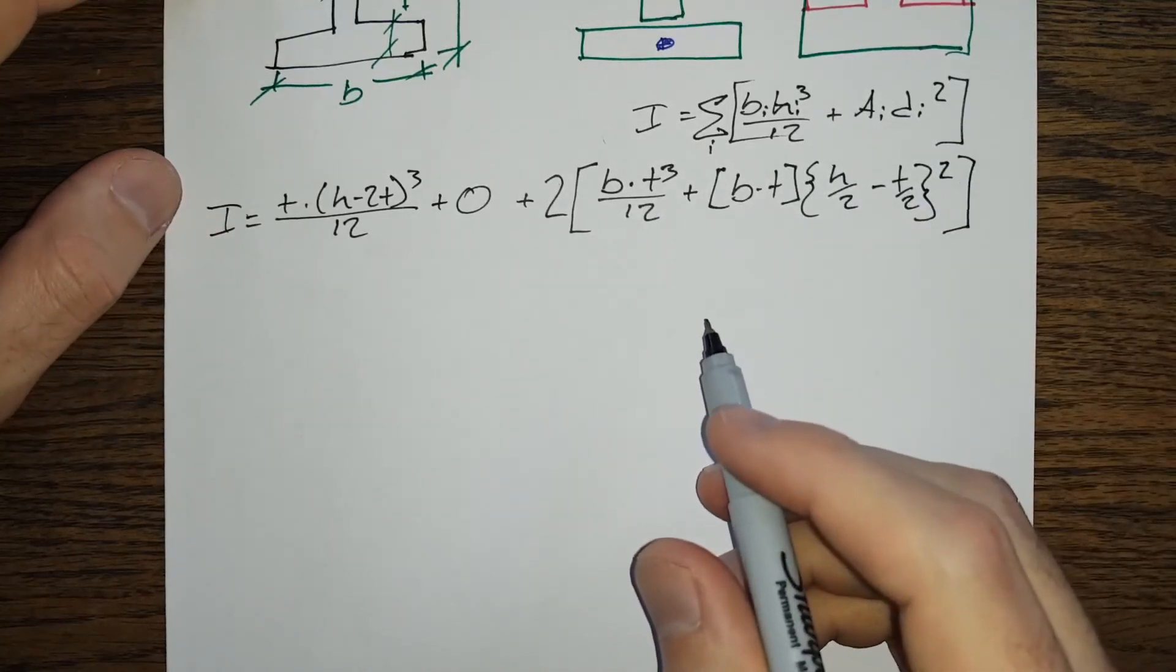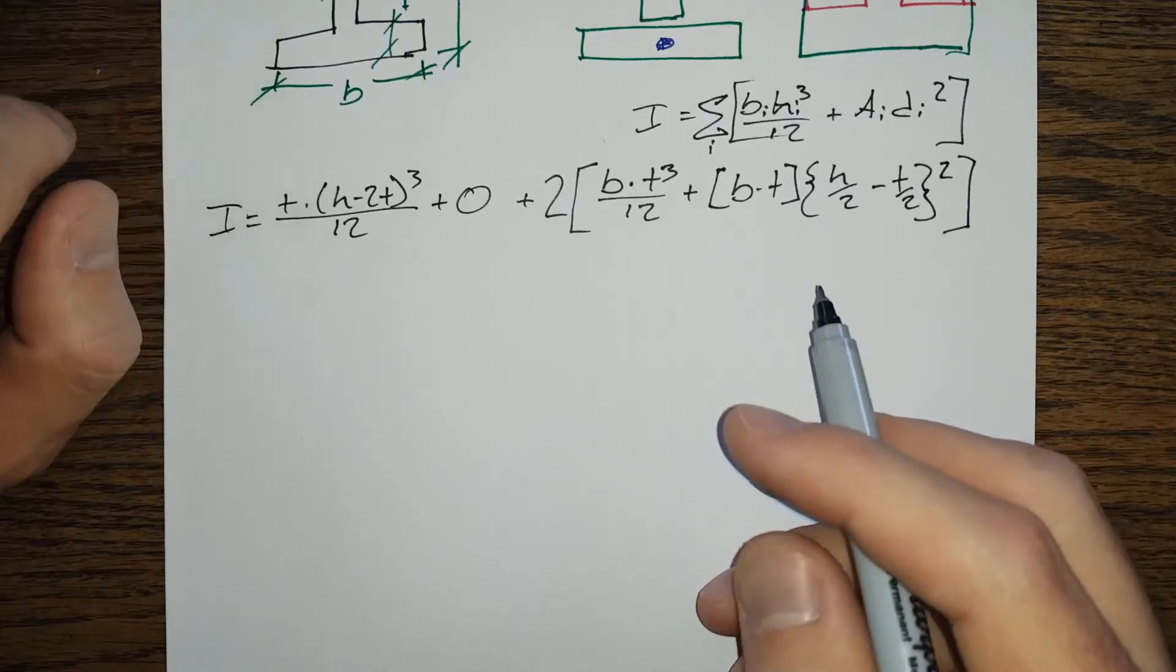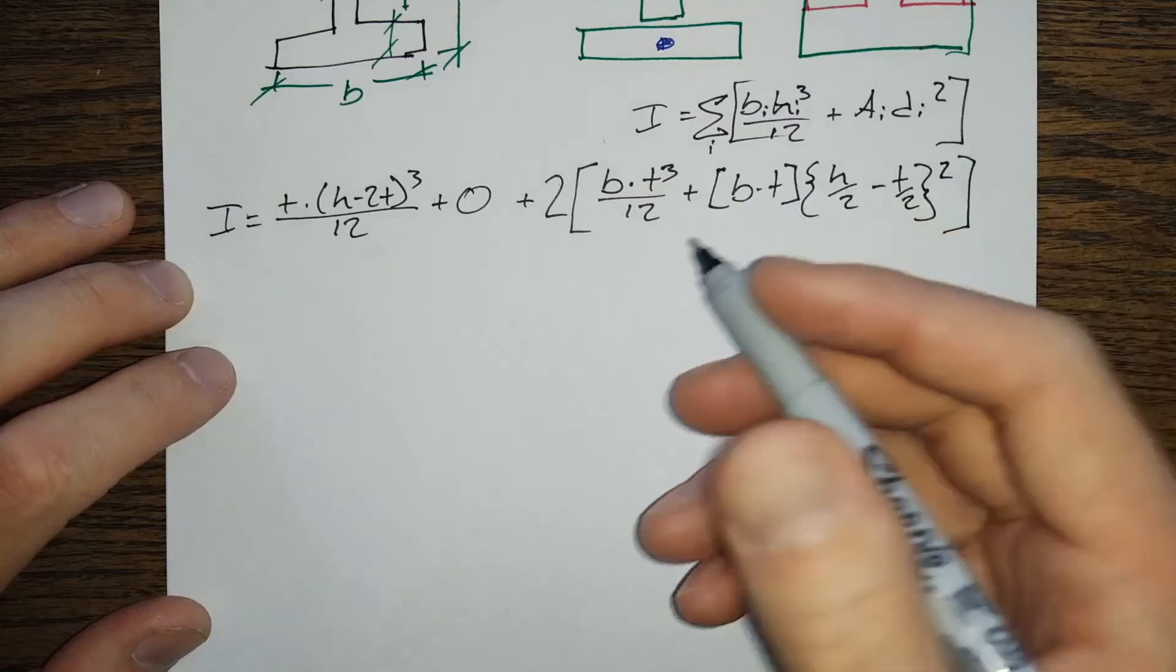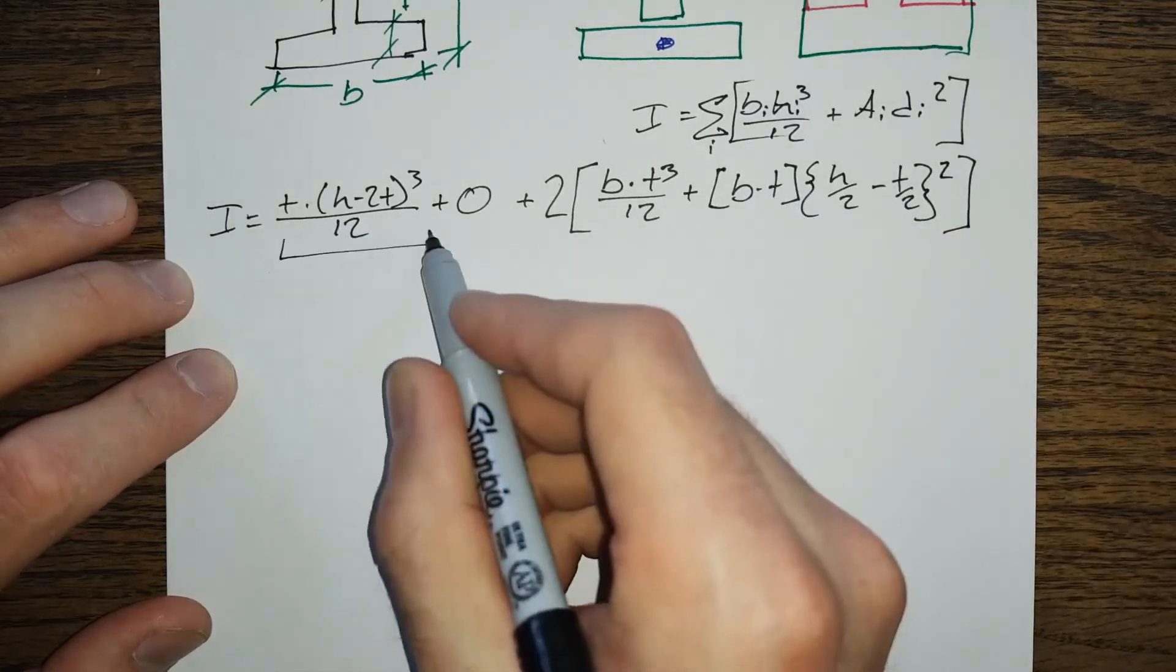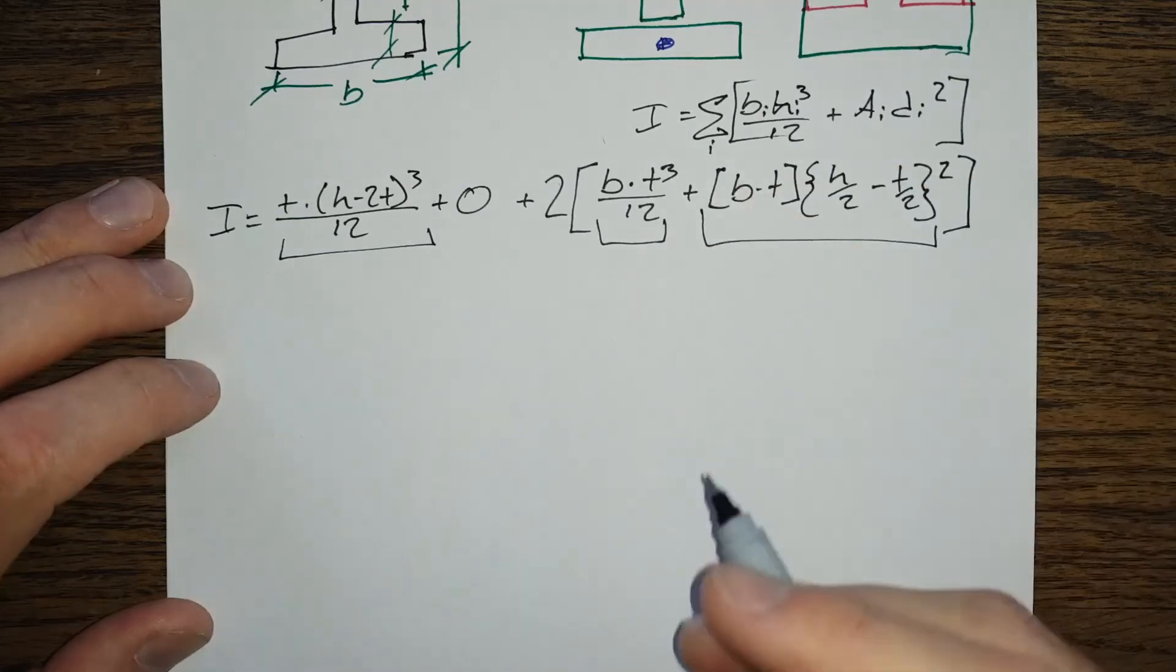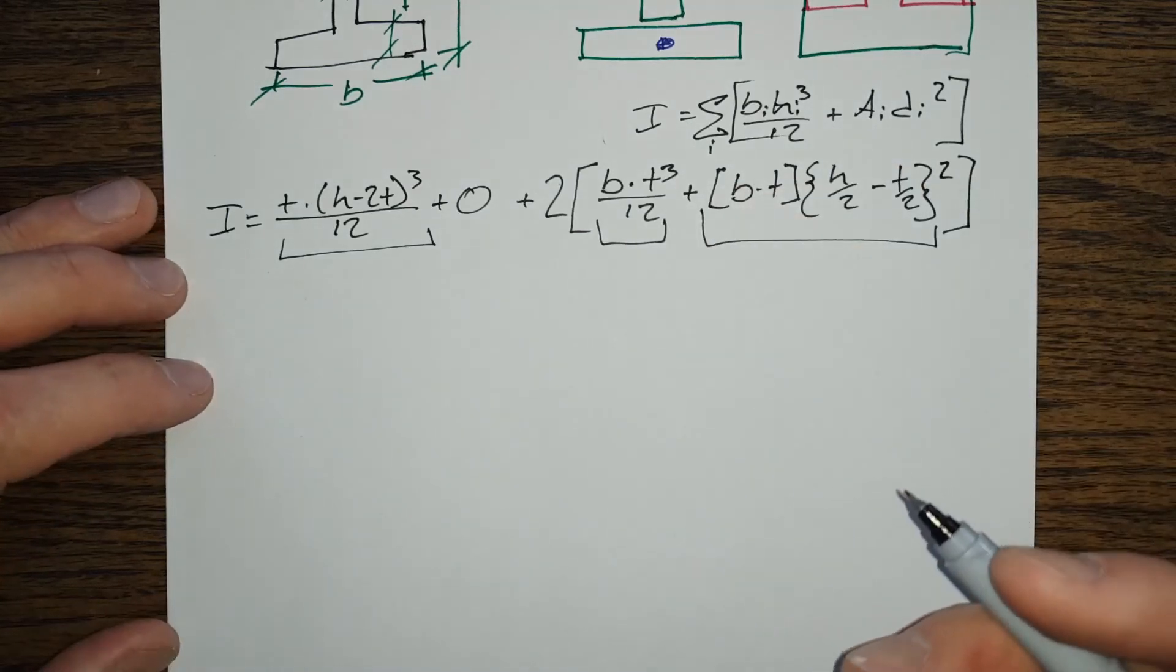Like that, and I'm not going to go through the lovely task of simplifying that. But with real numbers, this is a chunk you can put in your calculator, that's a chunk you can put in your calculator, that's a chunk you can put in your calculator, and you can simplify on down from there. So it's pretty easy to work through.